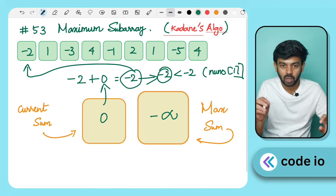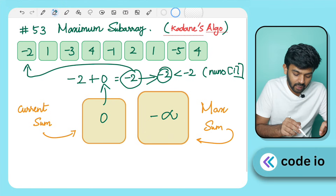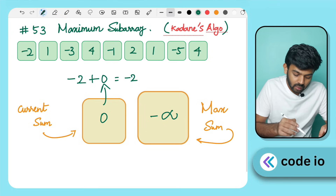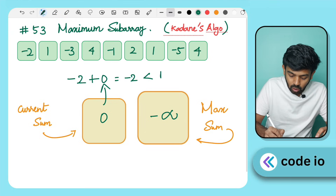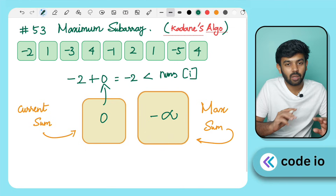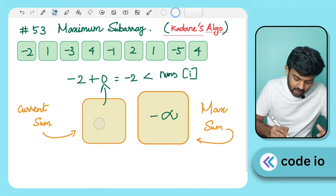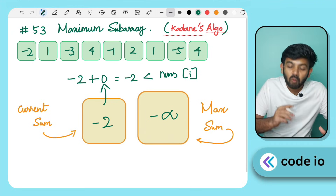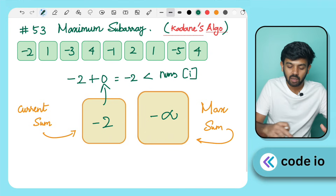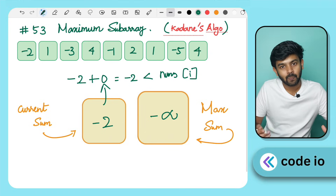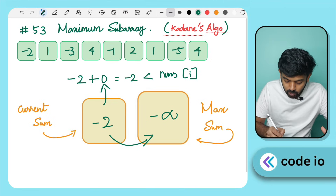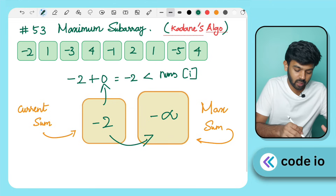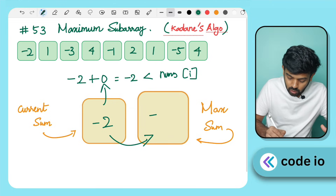In this case, we add minus 2 and it doesn't trigger the discard condition, so CurrentSum becomes minus 2. For each iteration, we update MaxSum. We compare: is minus 2 greater than minus infinity? Yes, so MaxSum is updated to minus 2.